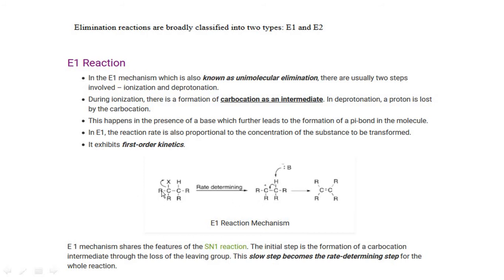For example, in E1 mechanism: we have C(R)(R)(H)(X), where R is an alkyl group and X is a halogen. First, X is removed in the form of X⁻, and there is formation of a carbocation. In the next step, in the presence of a base, the base abstracts a proton, and there is formation of a C=C double bond. E1 mechanism shares the feature of SN1 — the initial step is formation of a carbocation intermediate through loss of the leaving group X, and this is the rate-determining step.